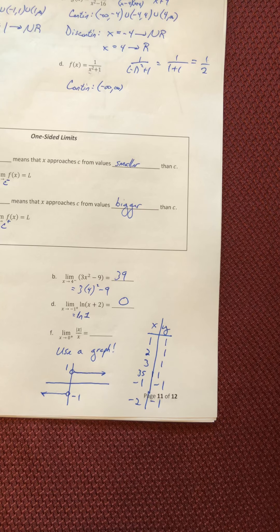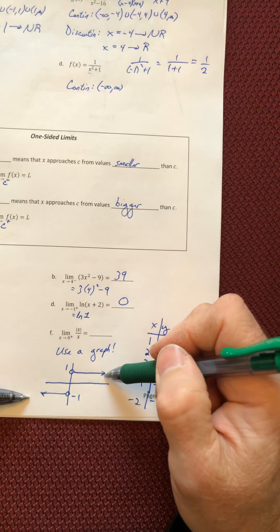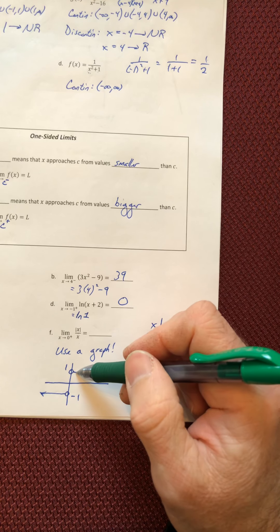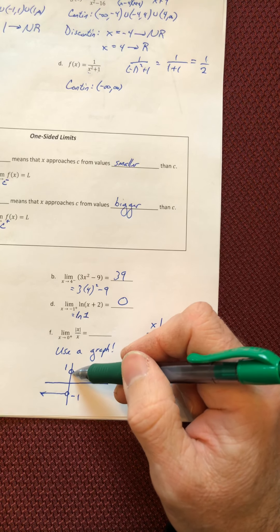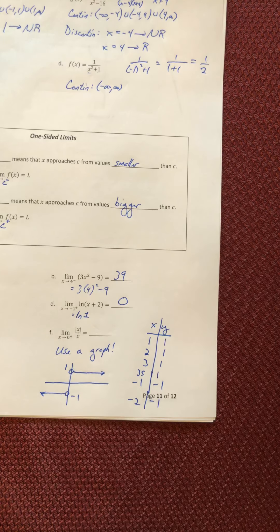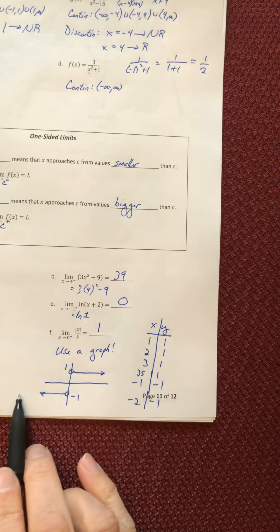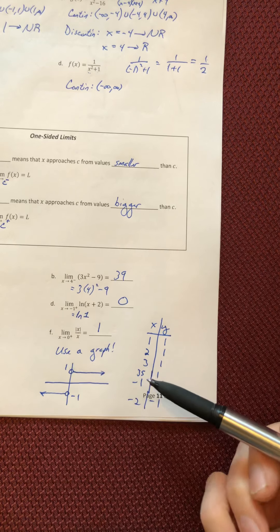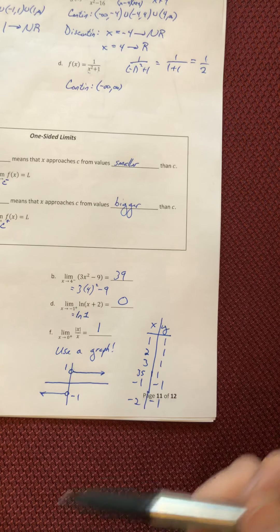So as you evaluate the graph, as you come in from just the right side, that's approaching the value of one. If it was from the left side, it equals negative one. And if it was a two-sided limit, it would not exist.